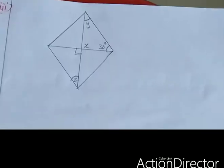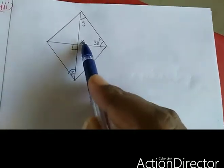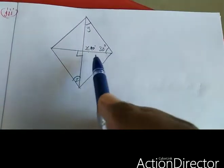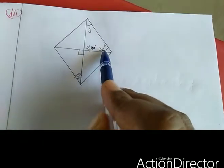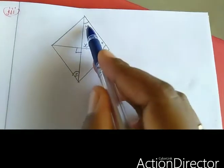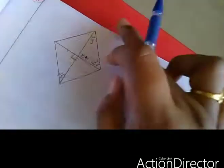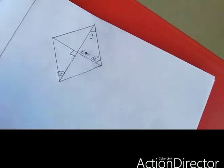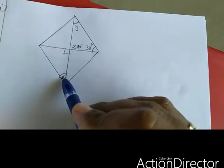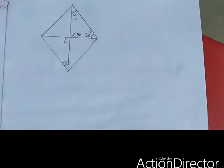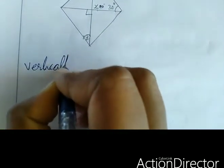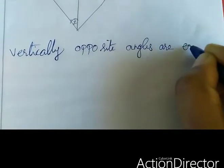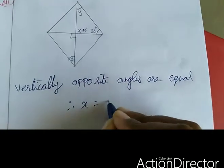Third subdivision. These two angles are vertically opposite angles — here 90 degrees, so here also 90 degrees. Therefore X equal to 90 degrees. Next, consider this triangle. The angle sum of a triangle is 180 degrees, so 90 plus 30 plus Y equal to 180 degrees.